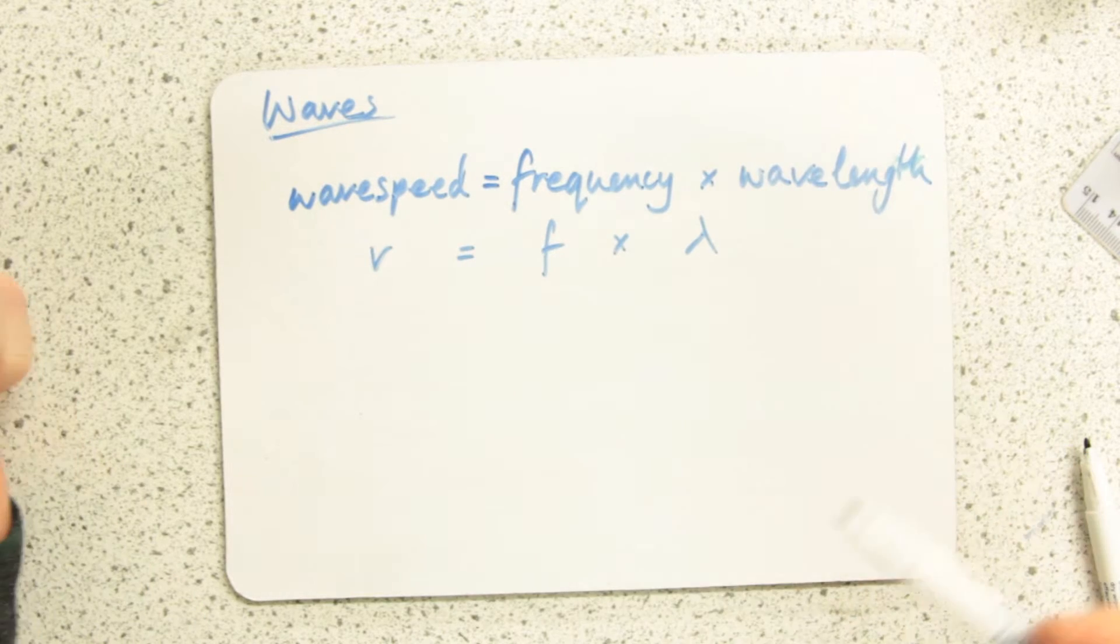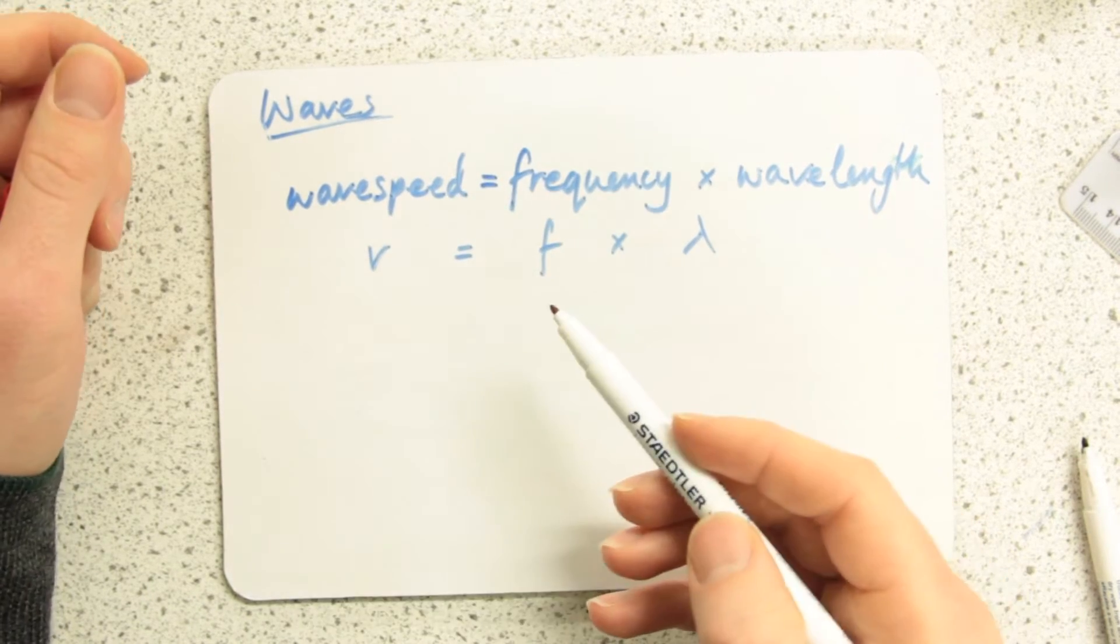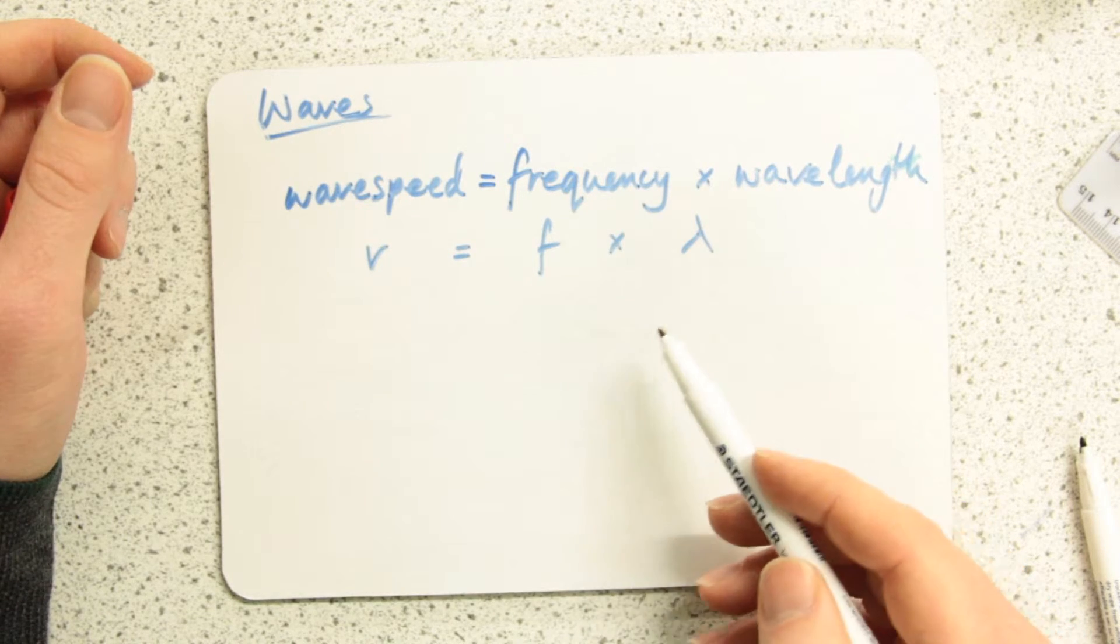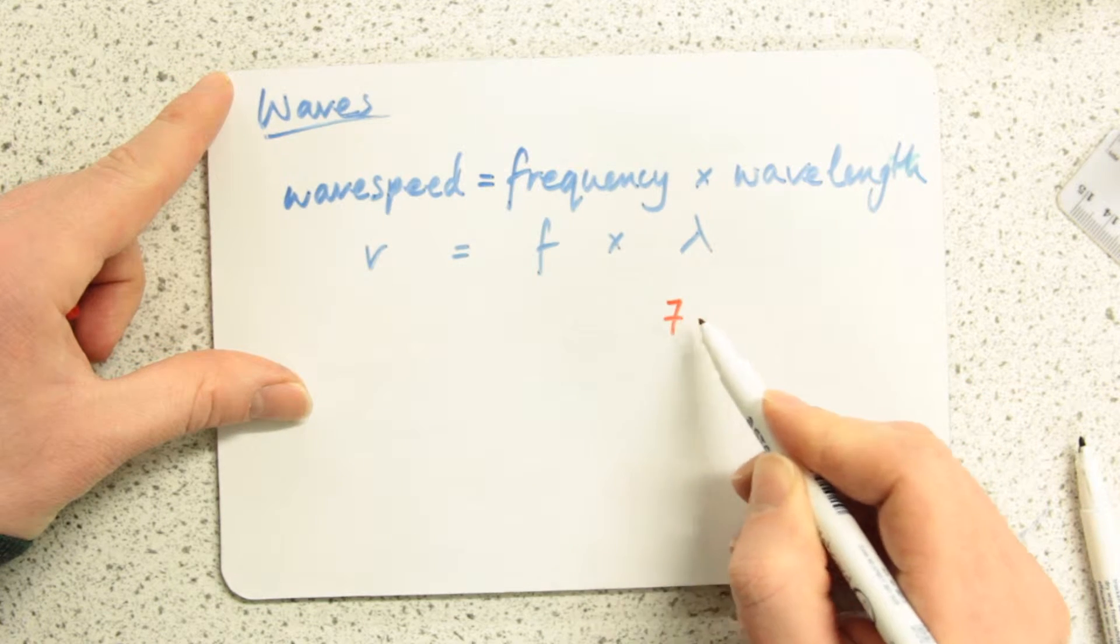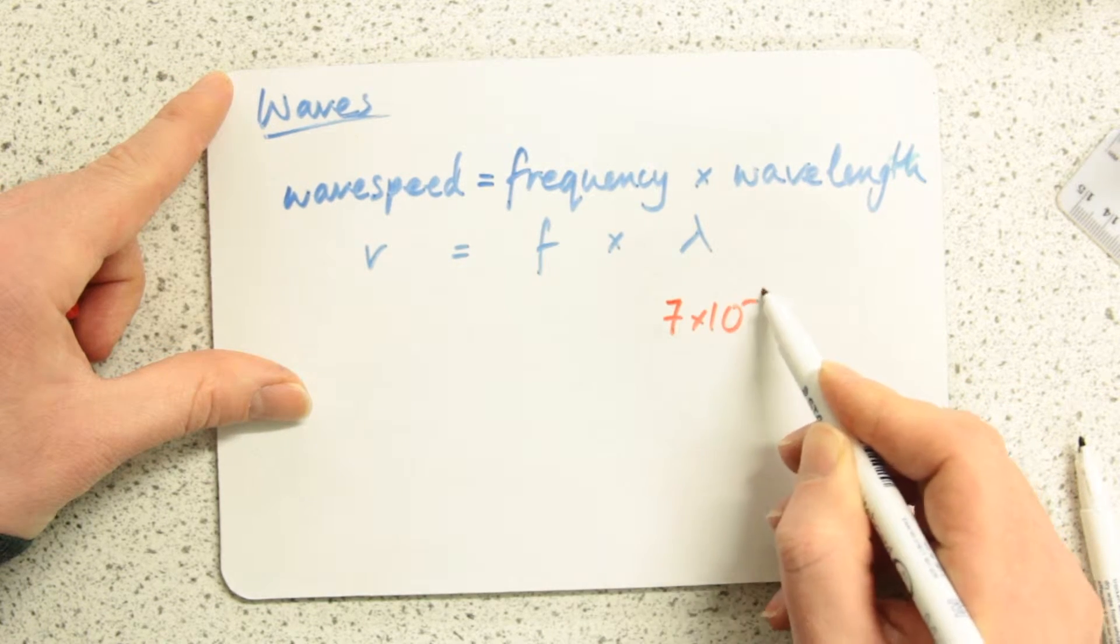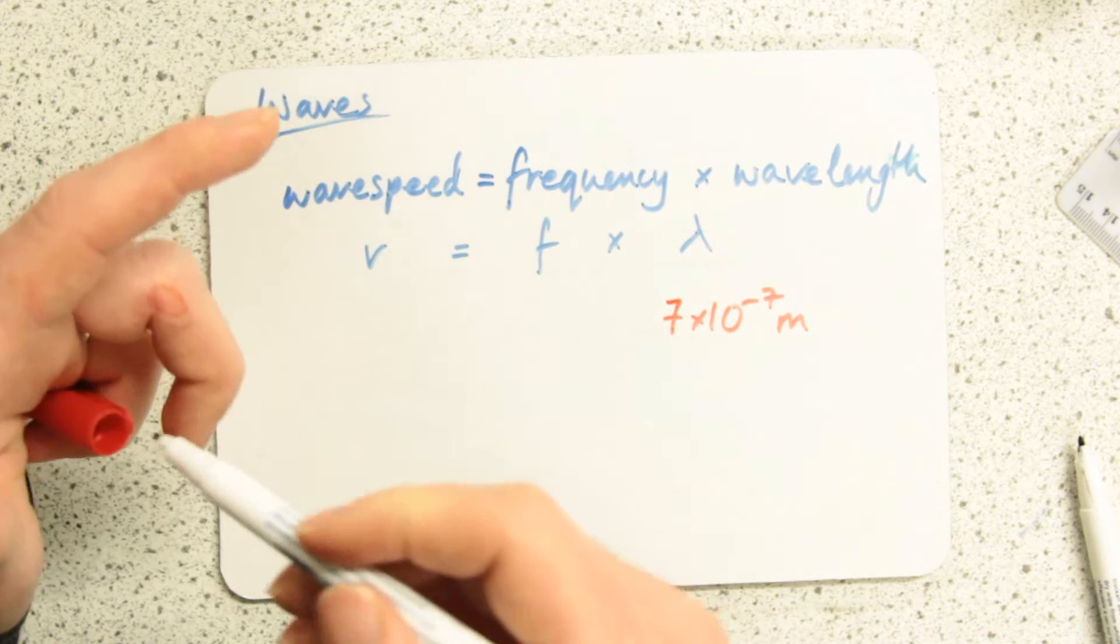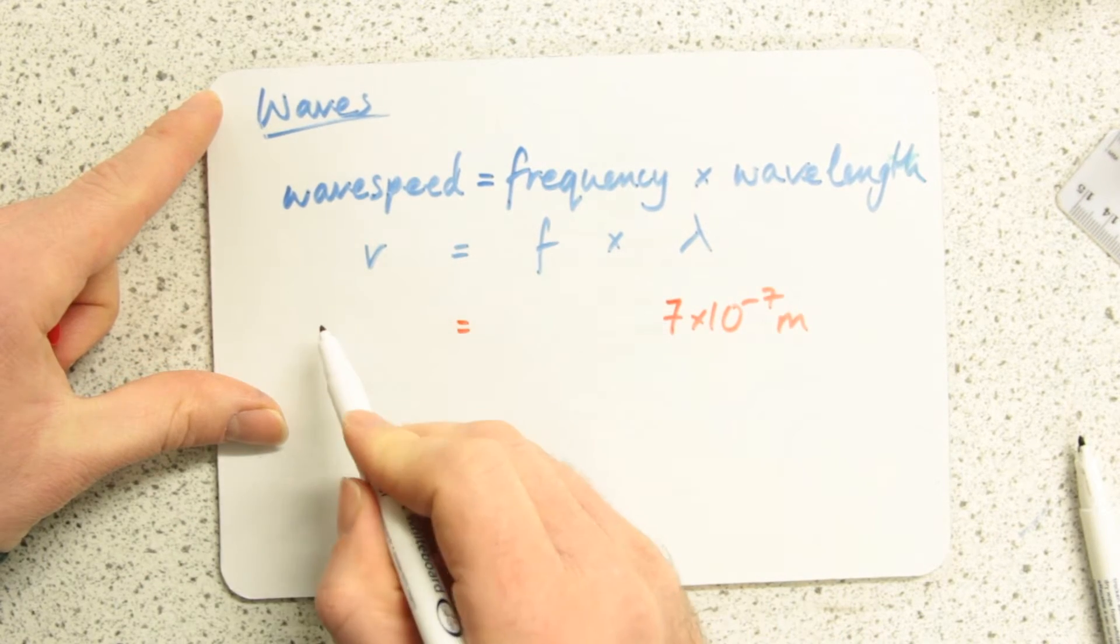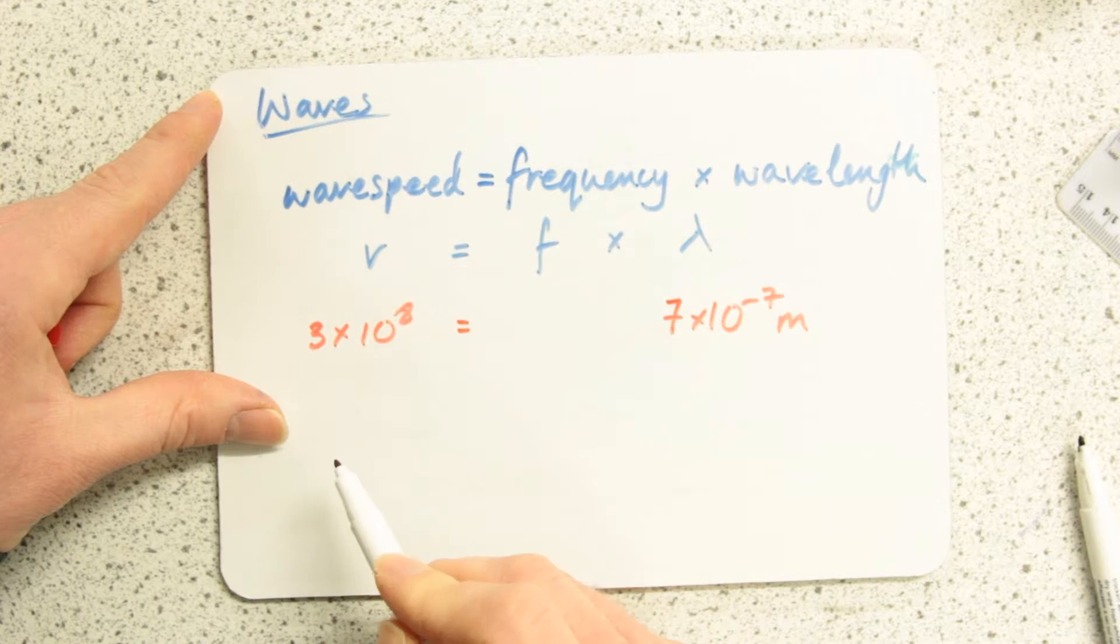These get a bit difficult when you're dealing with very large or very small numbers. For example, if this was giving you information about light, let's say red light which has a wavelength of 7 times 10 to the minus 7 metres, and you know that the speed of all light in a vacuum or in air is 3 times 10 to the 8 metres per second, what's the frequency associated with that red light?